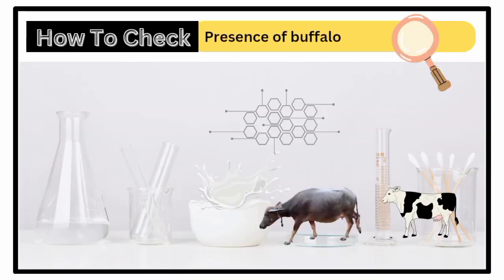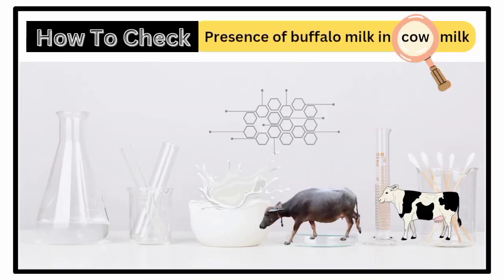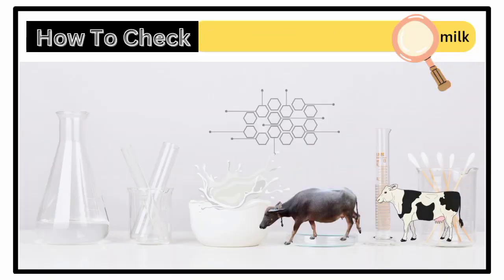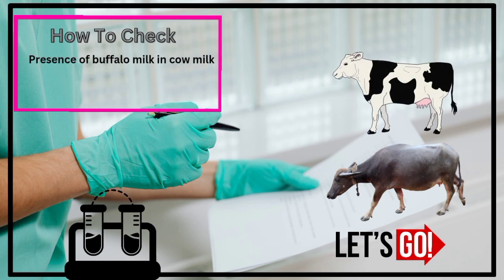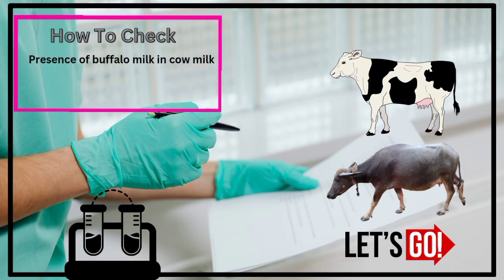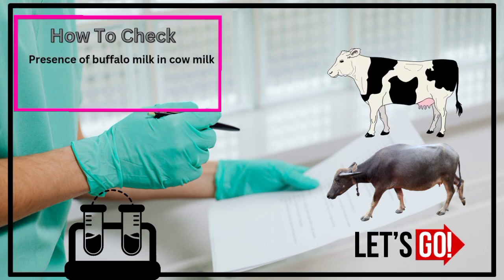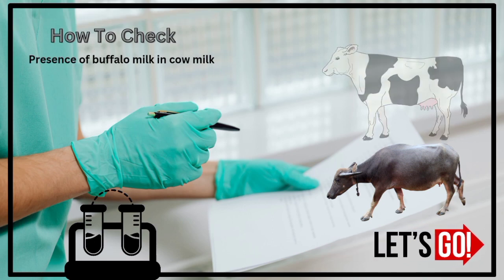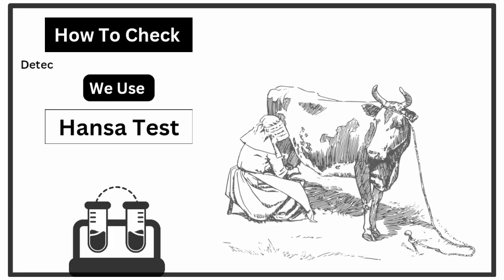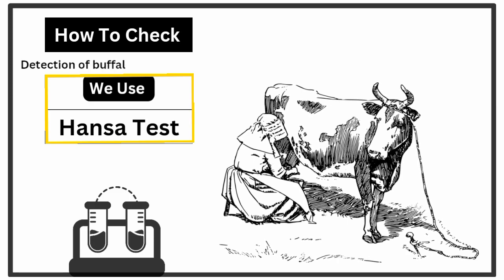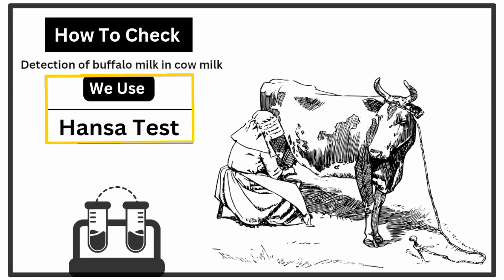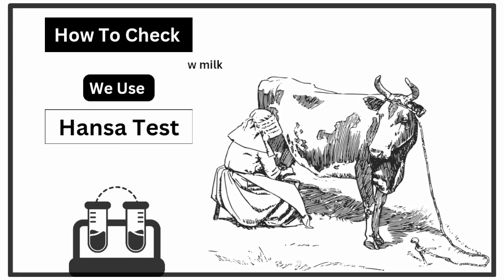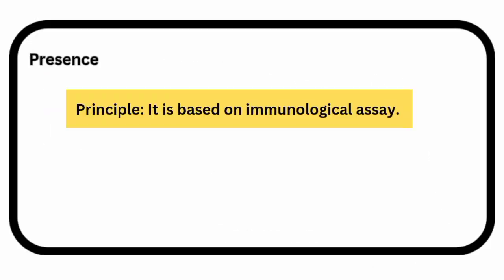Hello, dear veterinary students, let's discuss how to check the presence of buffalo milk in cattle milk by a simple test. For this purpose, we use the Hansa test, a widely used, simple, easy, and accurate test to check milk quality.